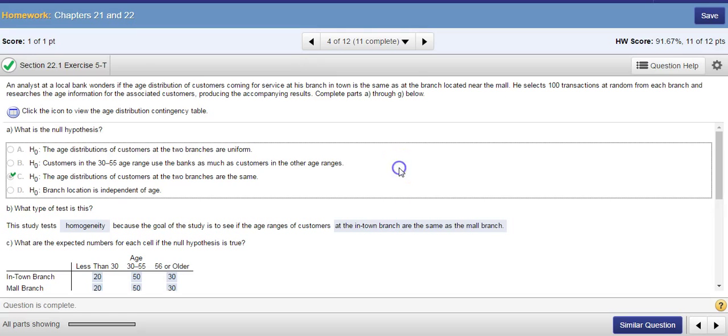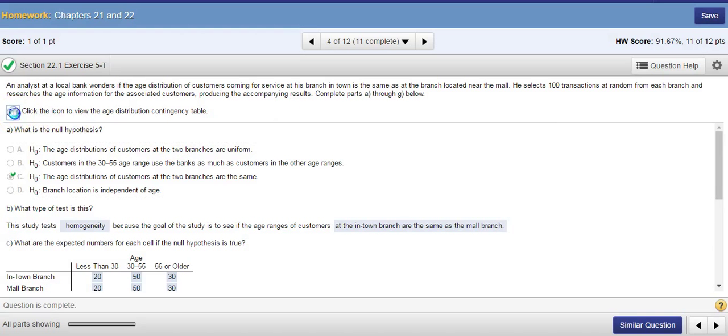So let's look at this example from Pearson's question poll. A person at his local bank wonders if the age distribution in his bank is the same as the distribution in another branch near the mall. So he selects 100 transactions at random and analyzes the data for age information. And he has the data like those.